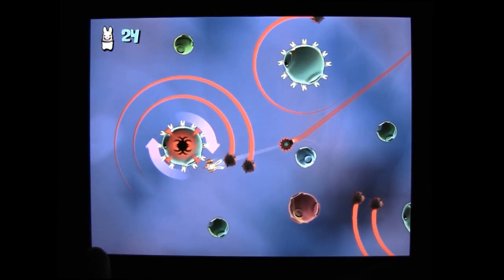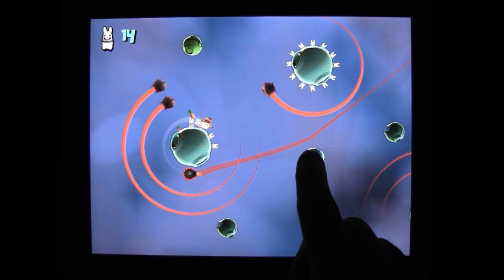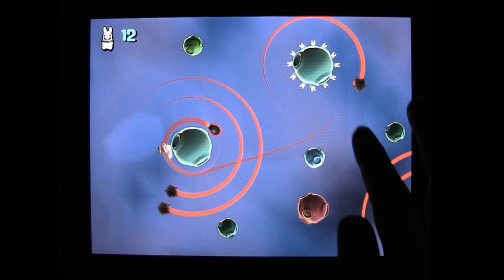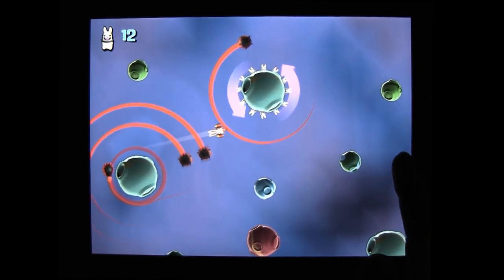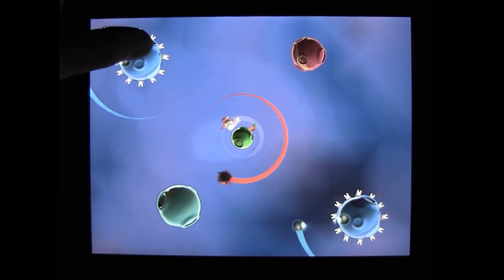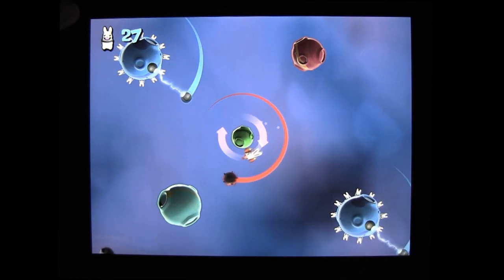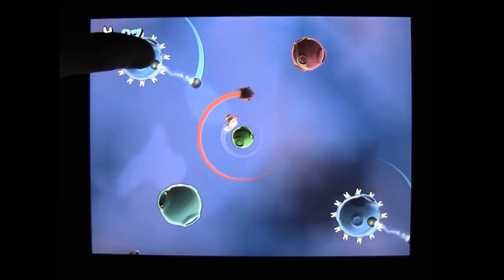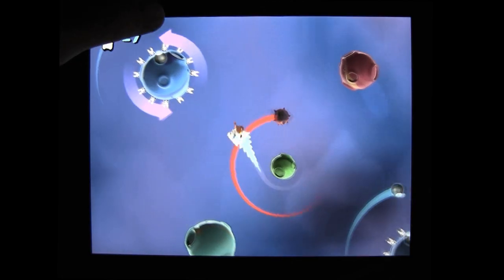You see, it turns out that outer space isn't the most hospitable place for bunnies. There are mechanical spiders in space, space mines, electric currents, and all kinds of orbiting obstacles that are out to kill the wabbit. Of course, you know this means war.